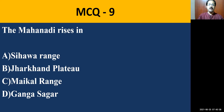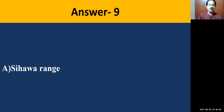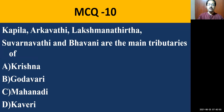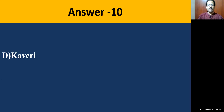MCQ question number nine: Mahanadi rises in — Sihava range, Jharkhand plateau, Michael range, or Ganga Sagar. The correct answer is Sihava range. MCQ question number ten: Kapila, Arkavati, Lakshmana Thirtha, Suvarnavati, and Bhavani are the main tributaries of — Krishna, Godavari, Mahanadi, or Kaveri. The correct answer is River Kaveri.